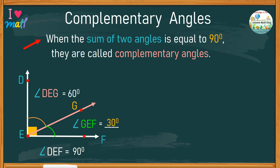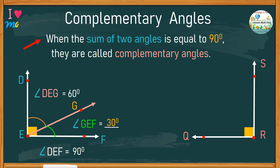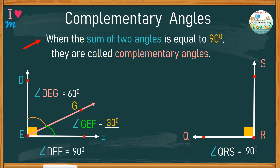Let's have another right angle QRS. One ray is perpendicular to the other, which indicates that this angle is a 90-degree angle. Again, we will add one side to split this angle into two. The sizes of the angles don't really matter — it doesn't have to be equal. One can be smaller and the other can be bigger.